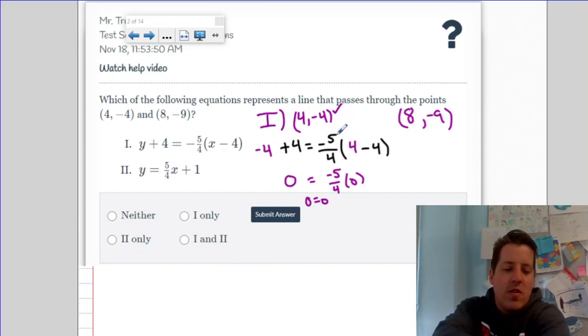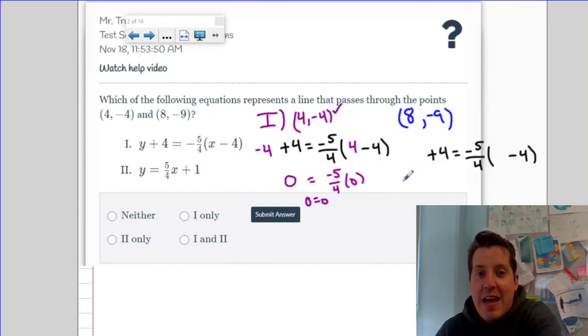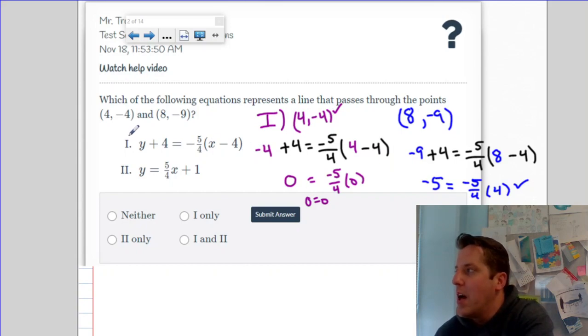Now I'm going to try the exact same thing with the other point. So my y value is negative 9 and my x value is 8. This simplifies down to negative 5 equals negative 5/4 times 4. That is also true. Since both of these work, line 1 does work for both of those points.